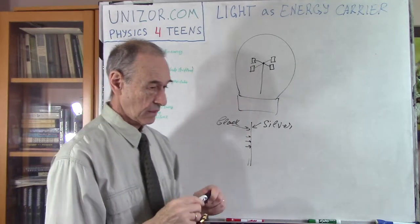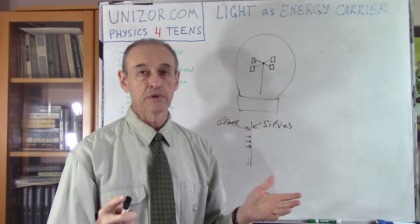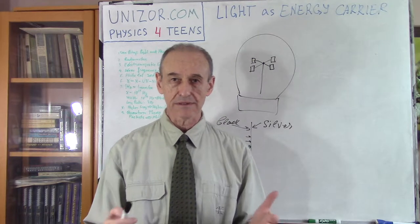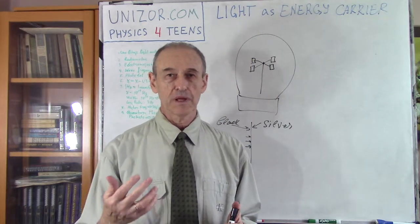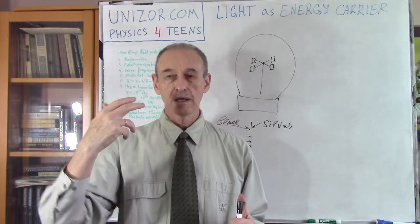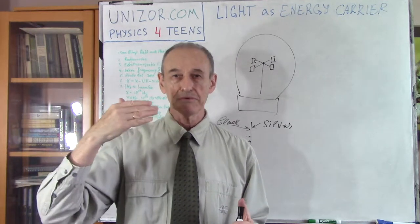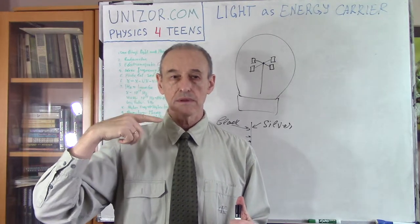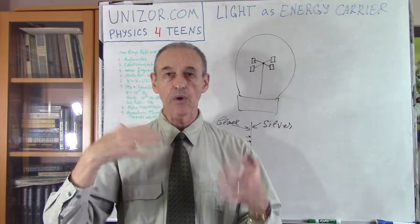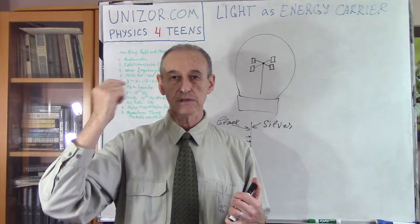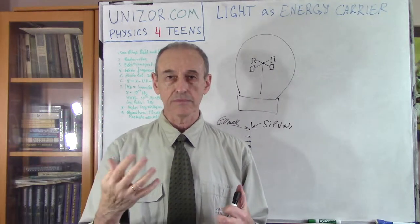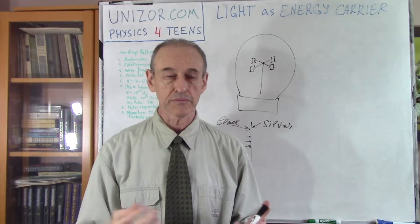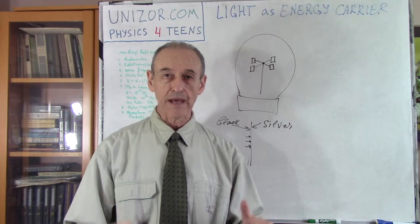Another proof that light has energy is that we see it. What does it mean that we see the light? Obviously, light comes into the eye, it somehow affects certain receptors there — certain cells — and they are being agitated, and they're sending an electric signal to the brain, and that's how we see the light. Again, without energy, it would be impossible. So I think I have convinced you that light carries energy.